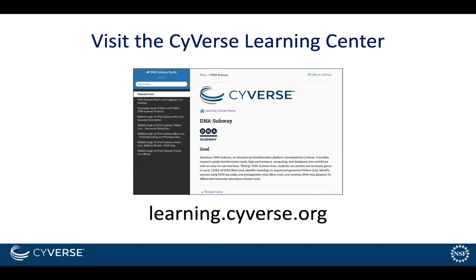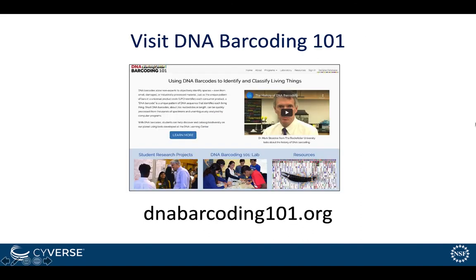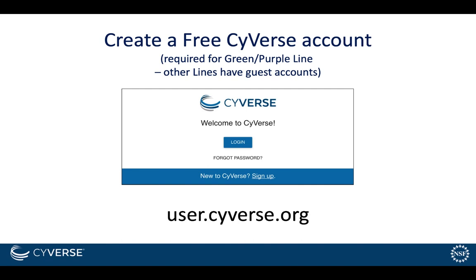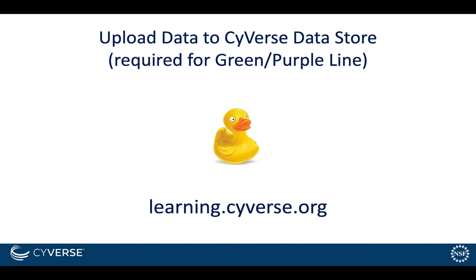Visit the CyVerse Learning Center to see detailed walkthroughs and tutorials of all of DNA Subway's lines, including additional educational materials, packets, and resources. Visit DNABarcoding101 for extensive resources for DNA barcoding using DNA Subway Blueline. We recommend that you create a free CyVerse account at user.cyverse.org. CyVerse accounts are required for Green and Purple Line, but other lines have guest functionalities. We also recommend visiting learning.cyverse.org to learn more about uploading data to CyVerse Datastore, which is required for Green and Purple Line.